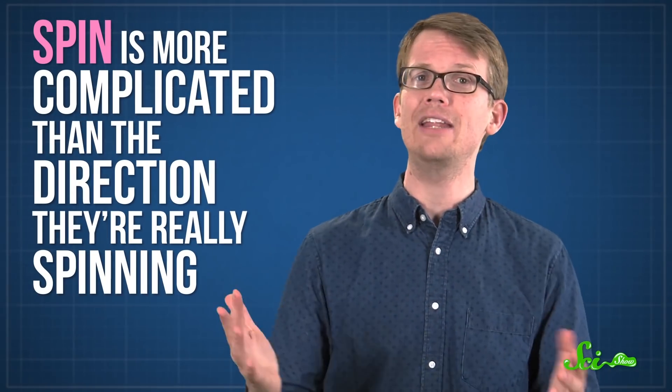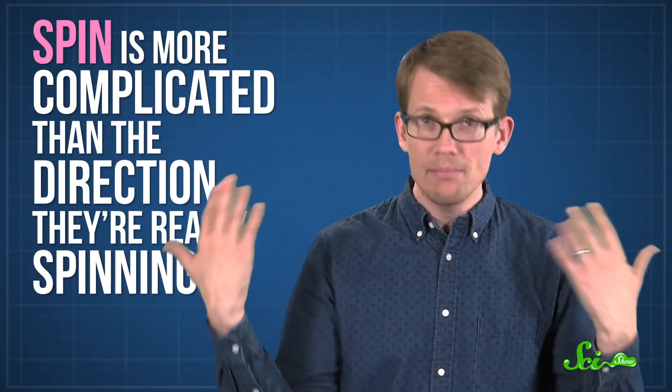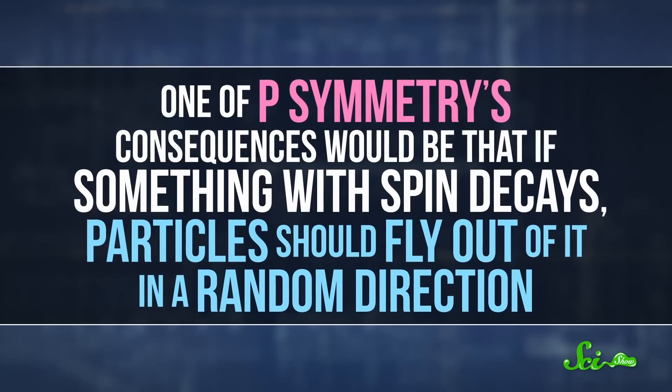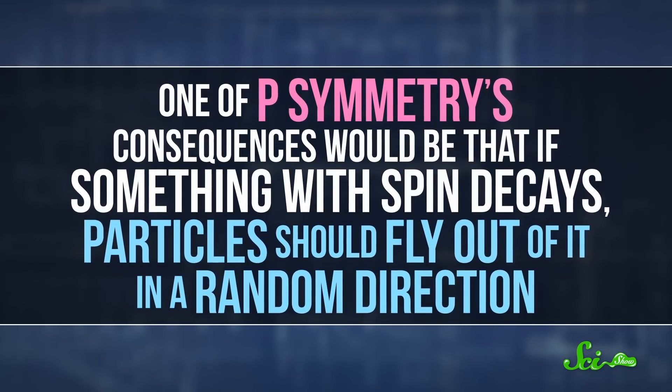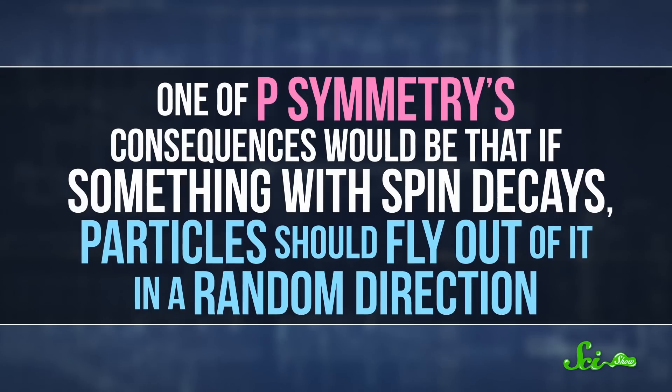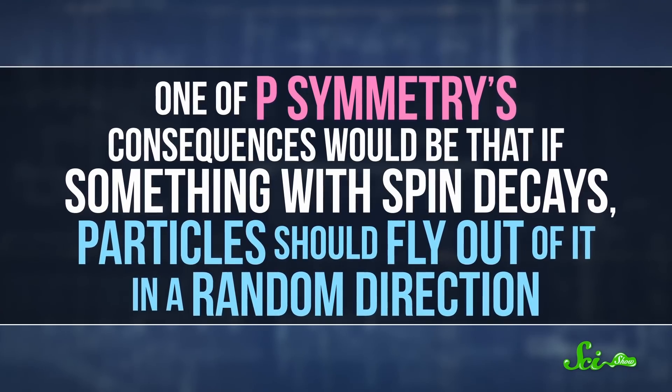Particles have a property called spin. It's more complicated than the direction they're really spinning, but it's an okay mental picture to have here. One of P-symmetry's consequences would be that if something with spin decays, particles should fly out of it in a random direction.